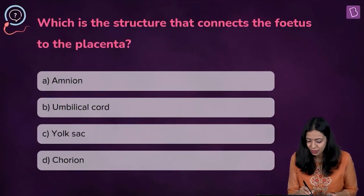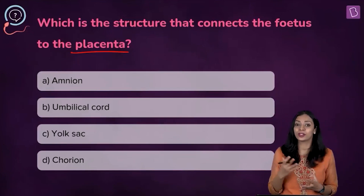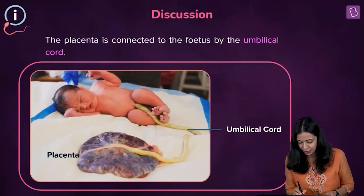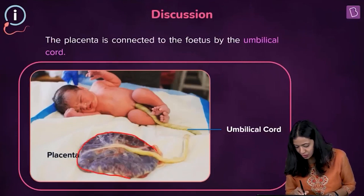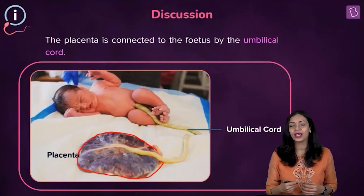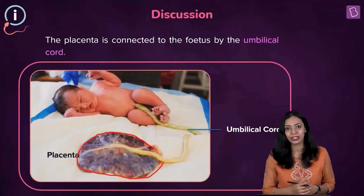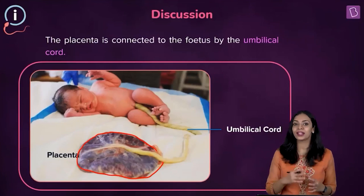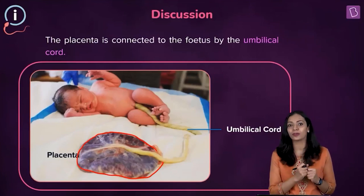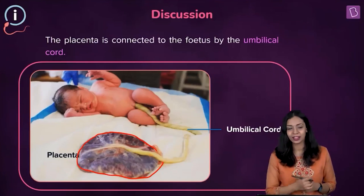So what is the placenta? The placenta is a structure formed during pregnancy through which transport of oxygen and important nutrients takes place from the mother to the fetus. It is very important for the development of the fetus. Also, it is through the placenta that waste is removed from the blood of the fetus and transported to the mother so she can eliminate it.